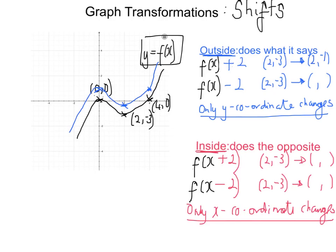If it's subtracting two, the graph moves down by two units. Following the coordinates: (0,0) goes to (0,−2), (2,−3) goes to (2,−5), and (4,0) goes to (4,−2). So outside transformations — written like this — just change the y coordinate and do exactly what they say.